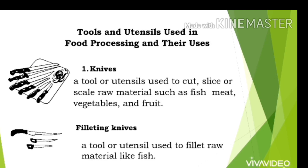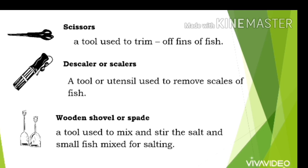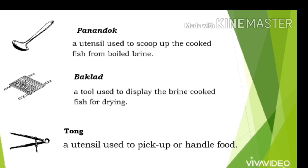Tools and utensils used in food processing and their uses: Knives, a tool or utensil used to cut, slice, or scale raw material such as fish, meat, vegetables, and fruit. Filleting knives, used to fillet raw material like fish. Scissors, a tool used to trim off fins of fish. De-scaler or scalers, used to remove scales of fish. Wooden shovel or spade, used to mix and stir the salt and small fish mix for salting. Panandok, a utensil used to scoop up cooked fish from boiled brine. Backlad, a tool used to display brine-cooked fish for drying. Tong, a utensil used to pick up or handle food.